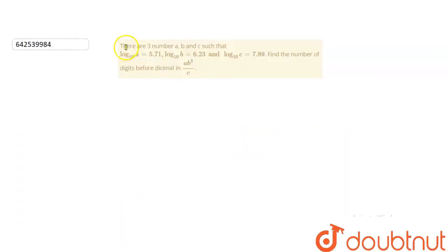The question given is: there are three numbers A, B, and C such that log A to the base 10 equals 5.71, log B to the base 10 equals 6.23, and log C to the base 10 equals 7.89. Find the number of digits before the decimal in A times B squared divided by C.